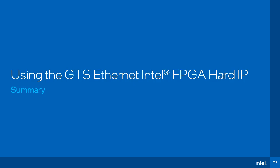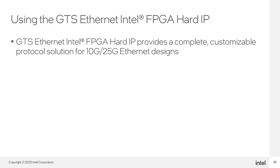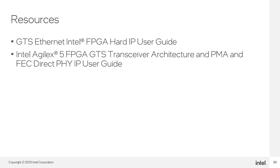In summary, the GTS Ethernet Intel FPGA Hard IP is a complete, customizable protocol stack providing an optimal solution for many 10G and 25G Ethernet applications. For additional information, guidelines, and learning, please refer to the GTS Ethernet Intel FPGA Hard IP User Guide. For additional information on GTS transceiver bank usage in Agilex 5 devices, particularly for multiple protocols sharing banks, refer to the Intel Agilex 5 GTS Transceiver Architecture and PMA and FEC Direct IP User Guide.